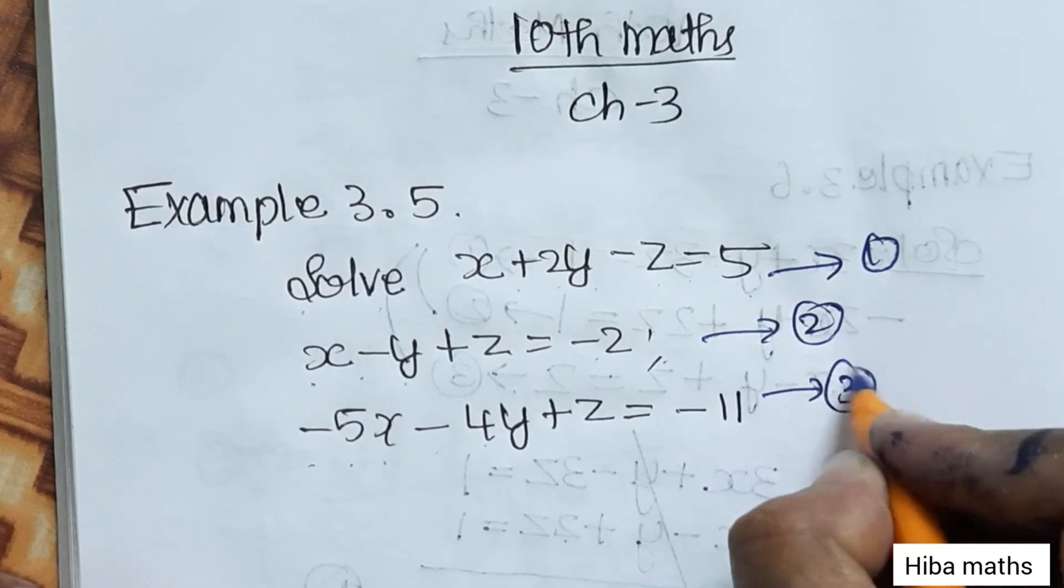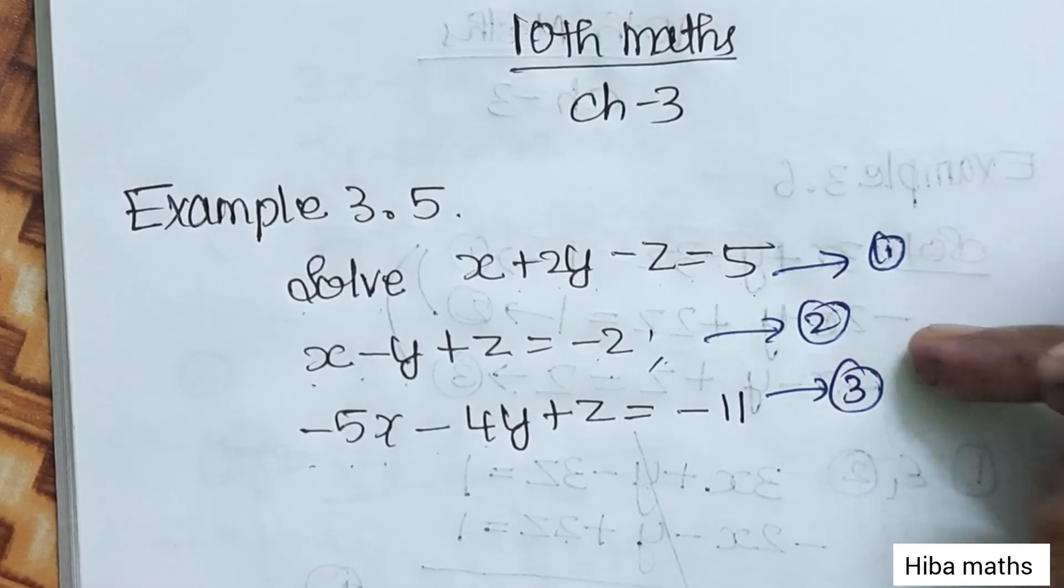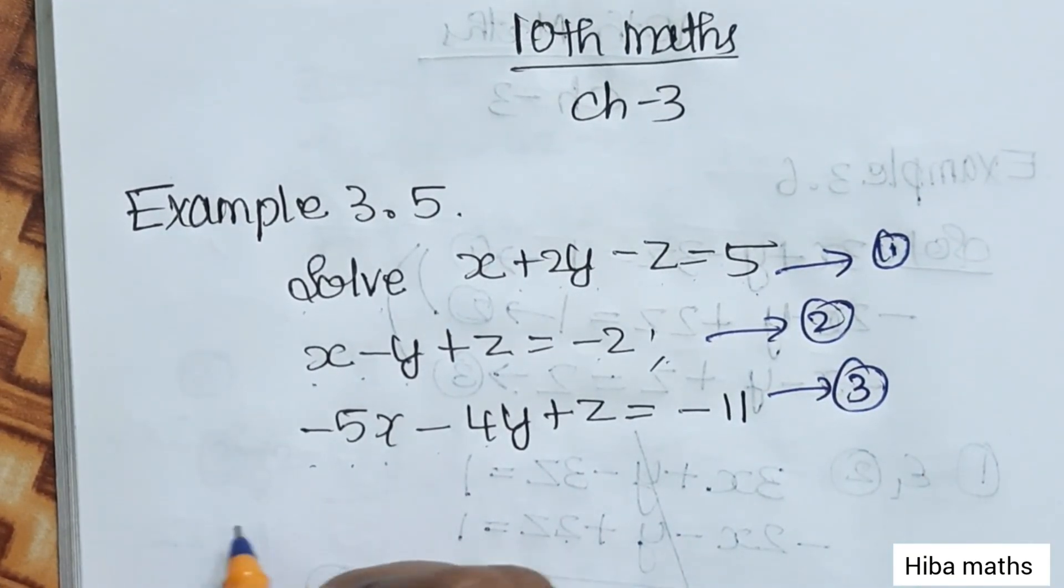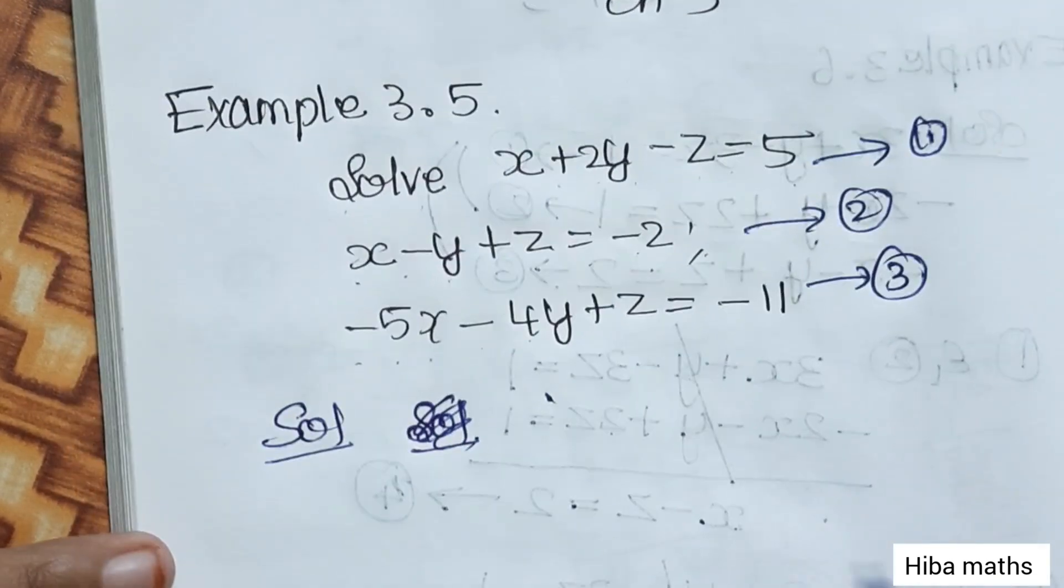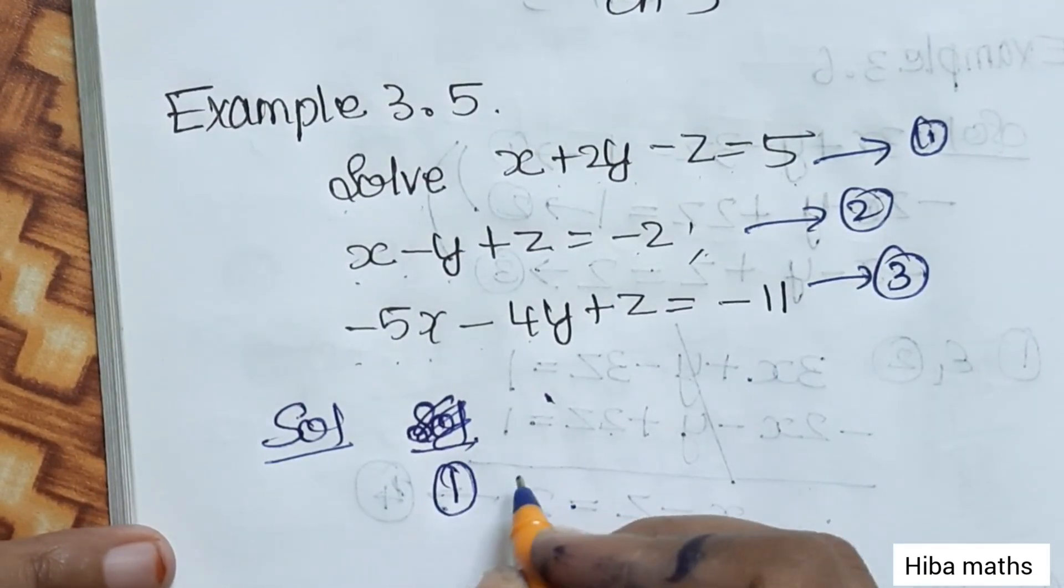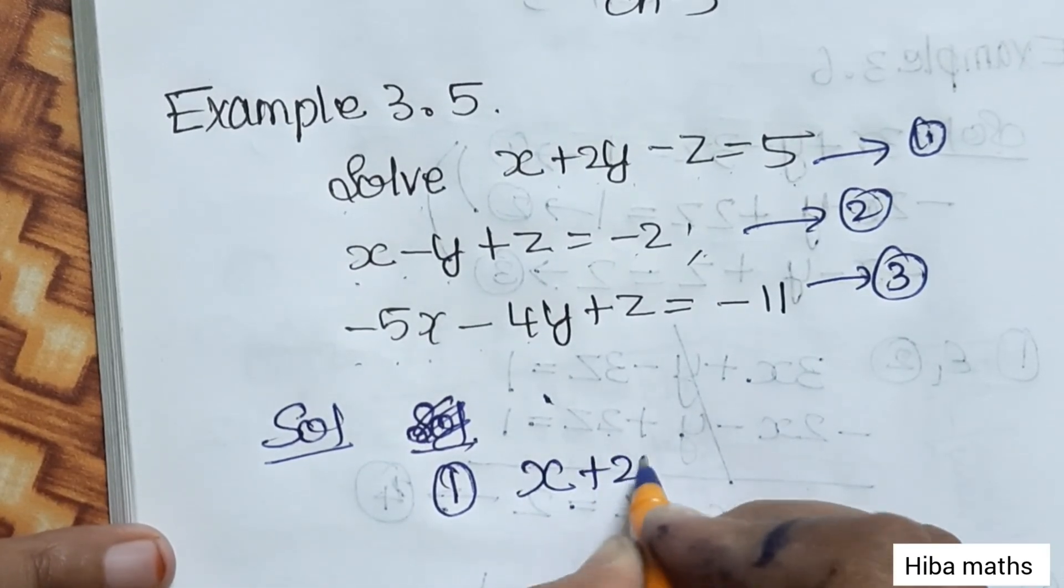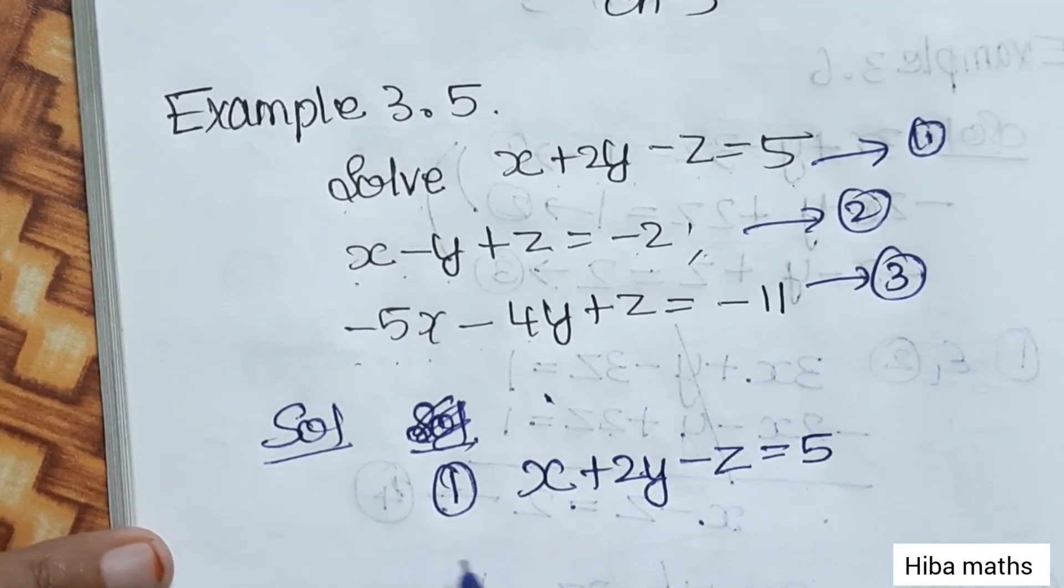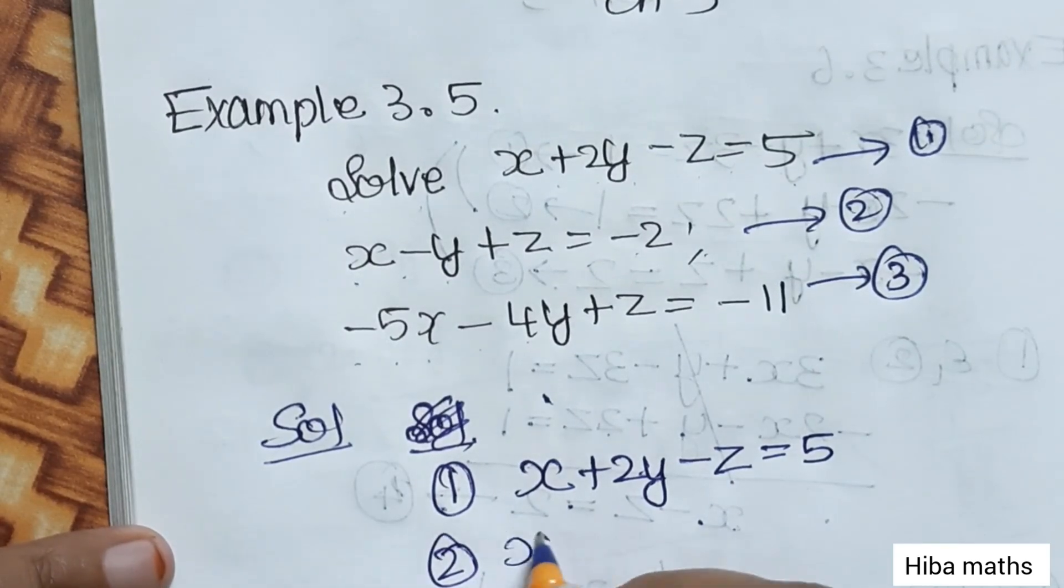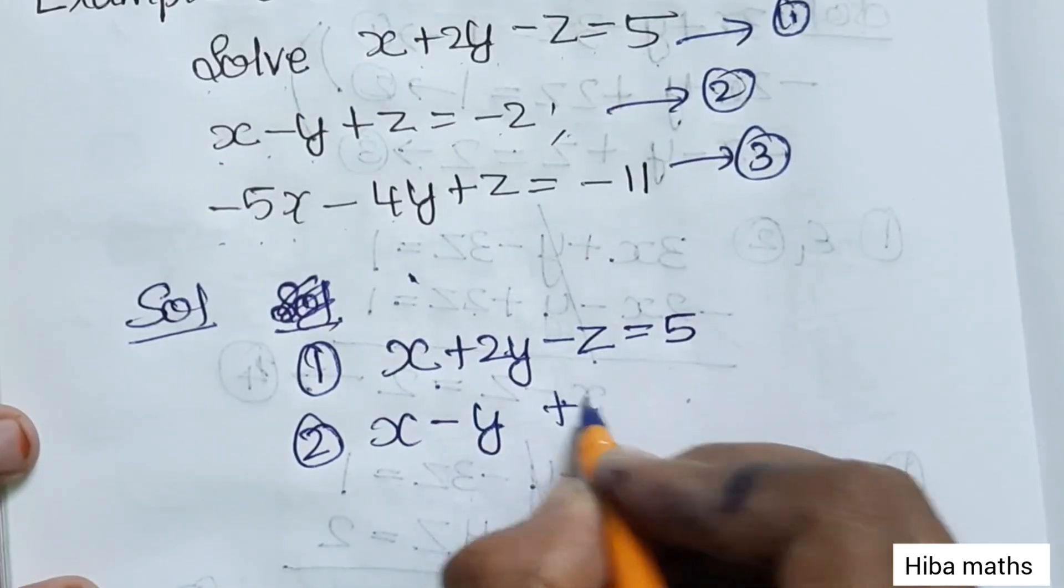This is the first equation, this is the second, and this is the third equation. If we add first and second, and then first and third, we'll solve. What is the first equation? x plus 2y minus z equals 5. The second equation is x minus y plus z equals minus 2.